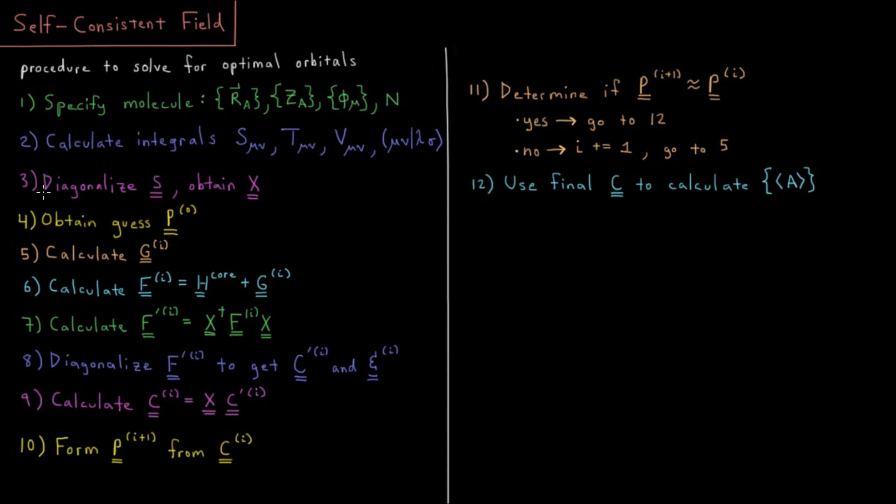Number three, we're going to diagonalize our overlap matrix built out of the overlap integrals and obtain the transformation matrix X as defined in the orthogonalization video.